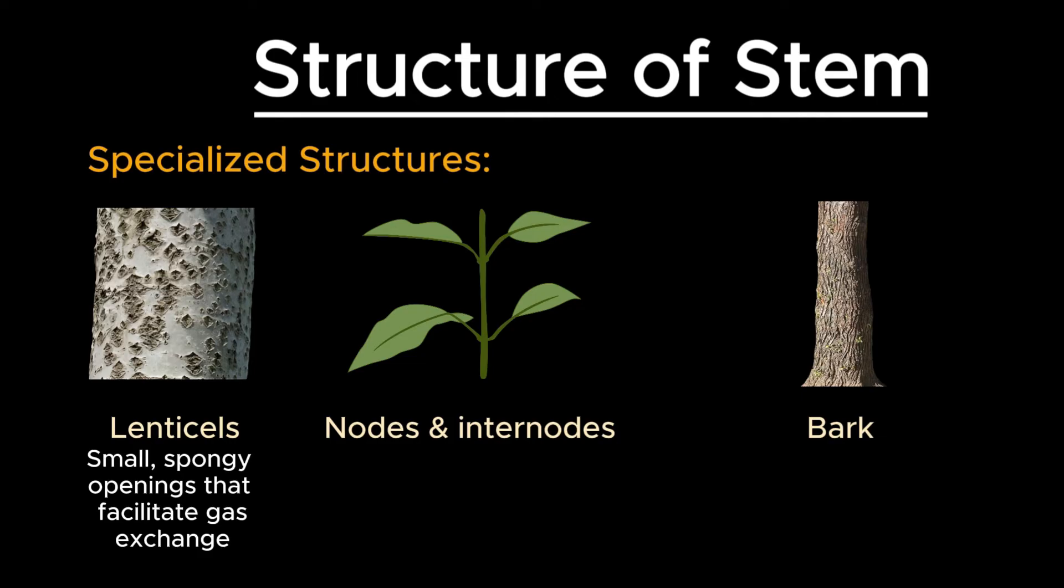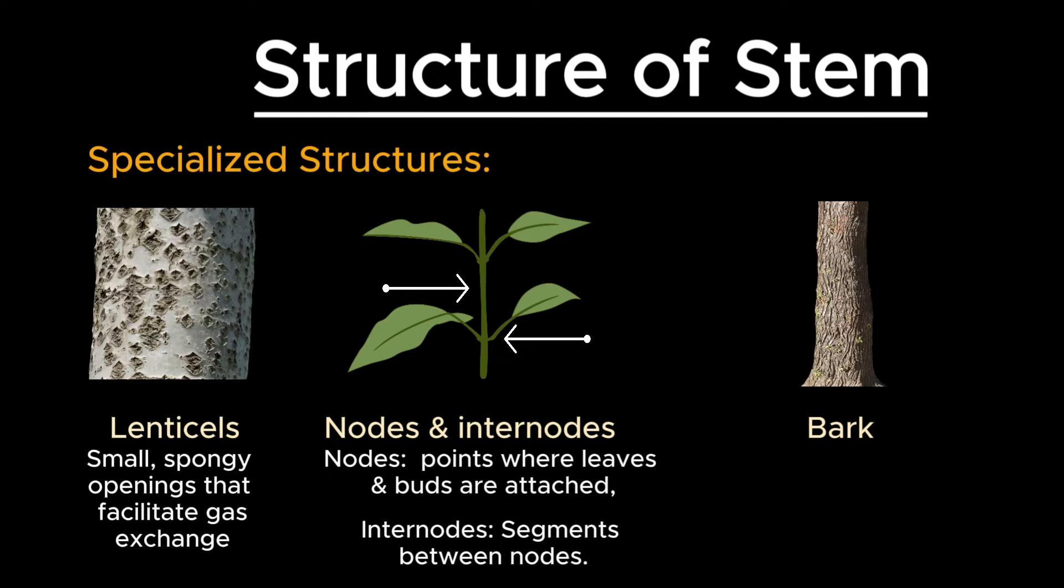The next one is nodes and internodes. Nodes are points on the stem where leaves and buds are attached, while internodes are the segments between nodes. The length and number of internodes can vary, influencing the overall growth pattern of the plant.